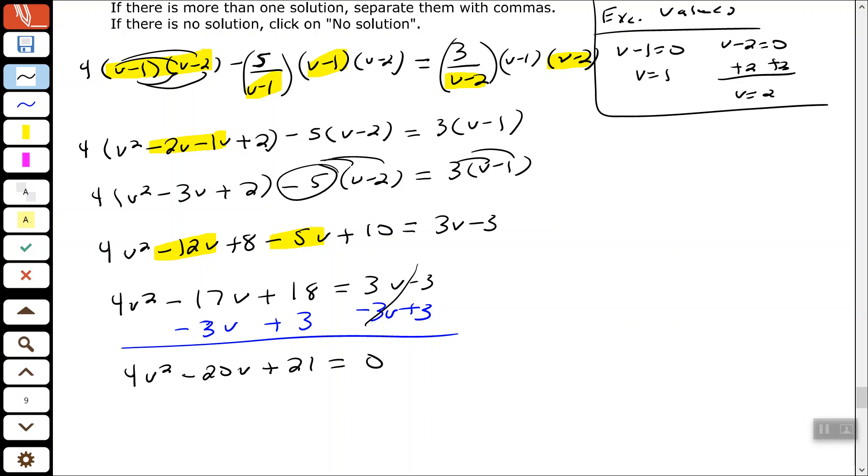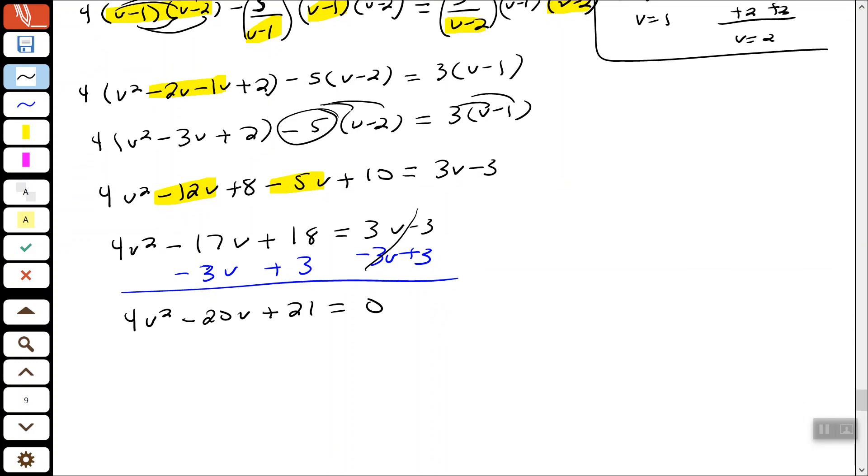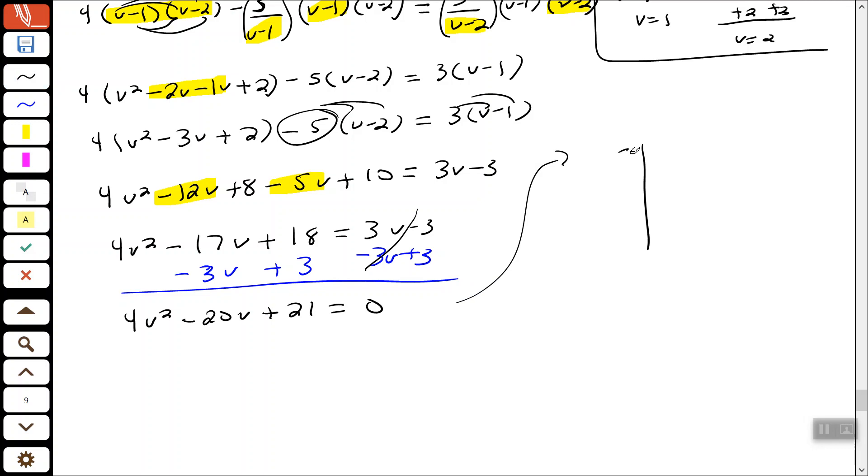We've done a lot of work, but we're not finished yet. We need to solve this equation by factoring the expression first. And since we have that 4, a number larger than 1 in front of V squared, I'm going to use the AC method. So I'm going to come out here to the side and factor this, starting off finding factors of 4 times 21, first times the last.